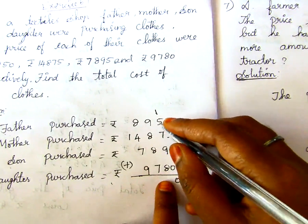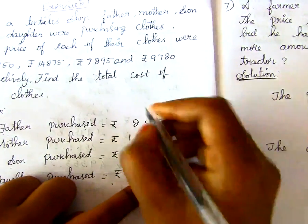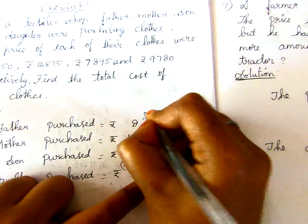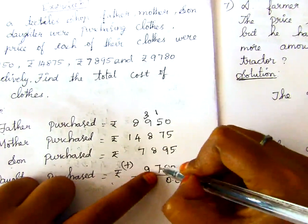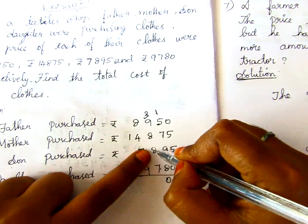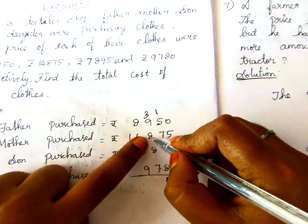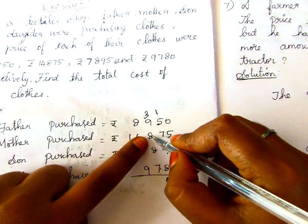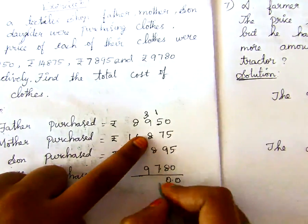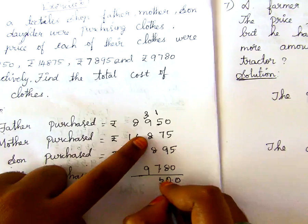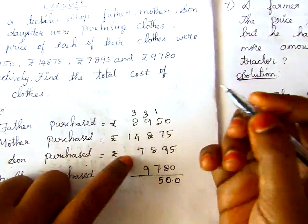25 plus 5 is 30. 0, carry 3. 3 plus 7 is 10. 10 plus 8 is 18. 18 plus 8 is 26. 26 plus 9 is 35. 5 remaining, carry 3.